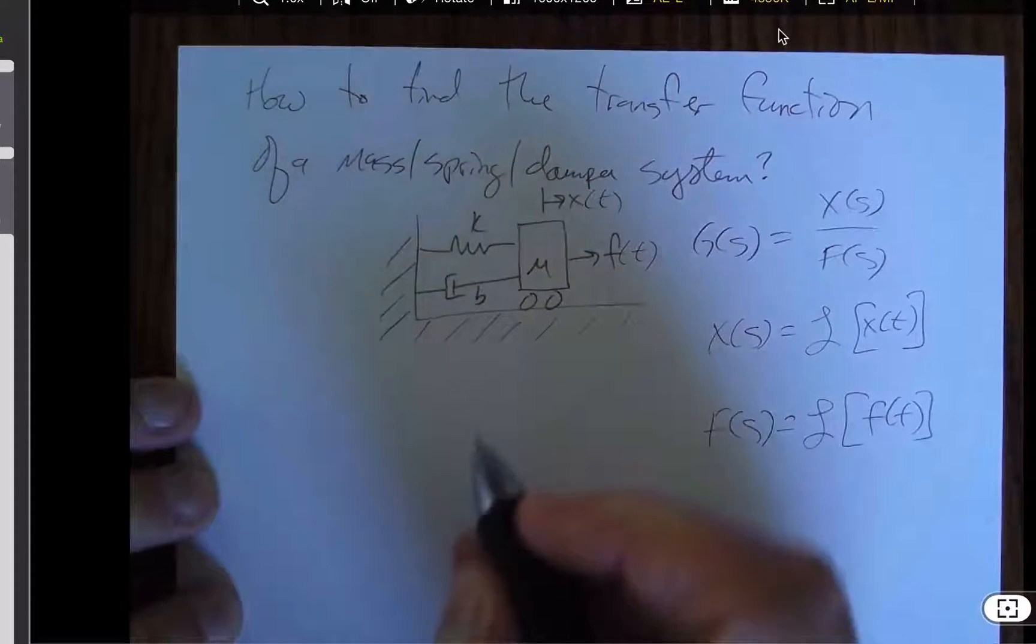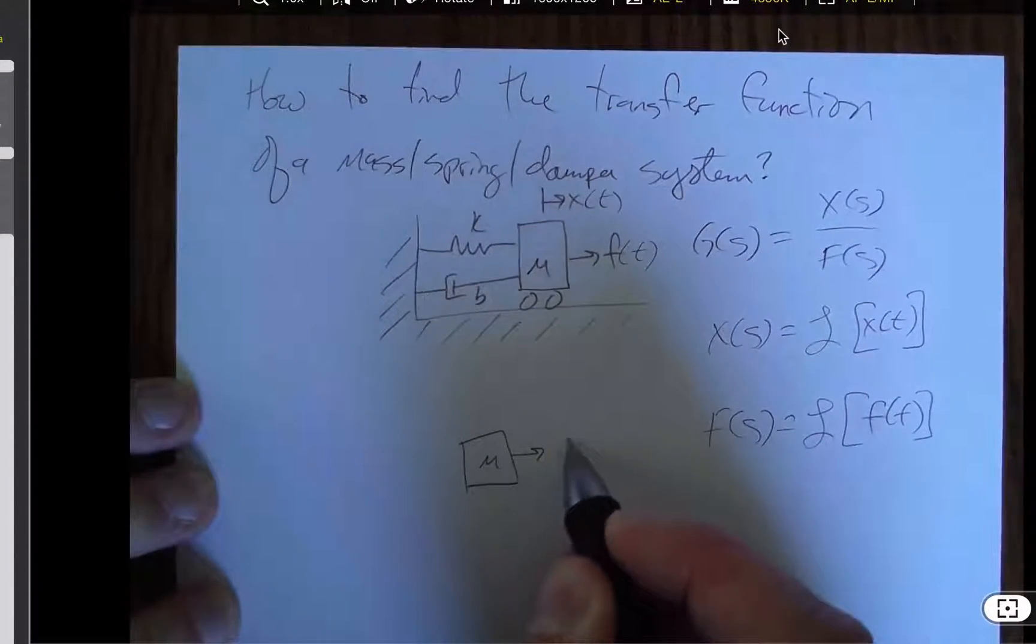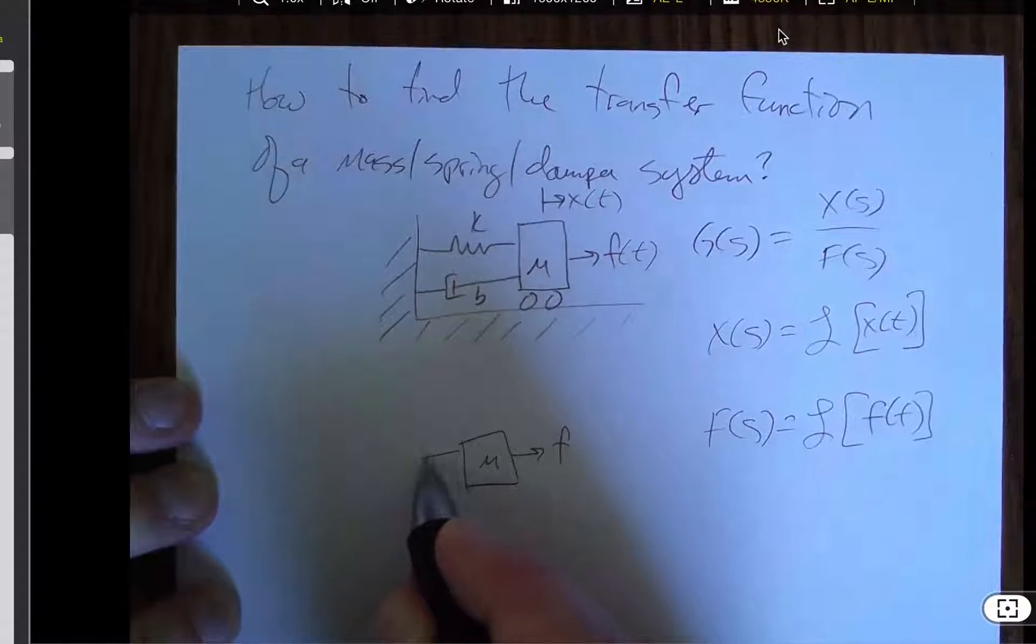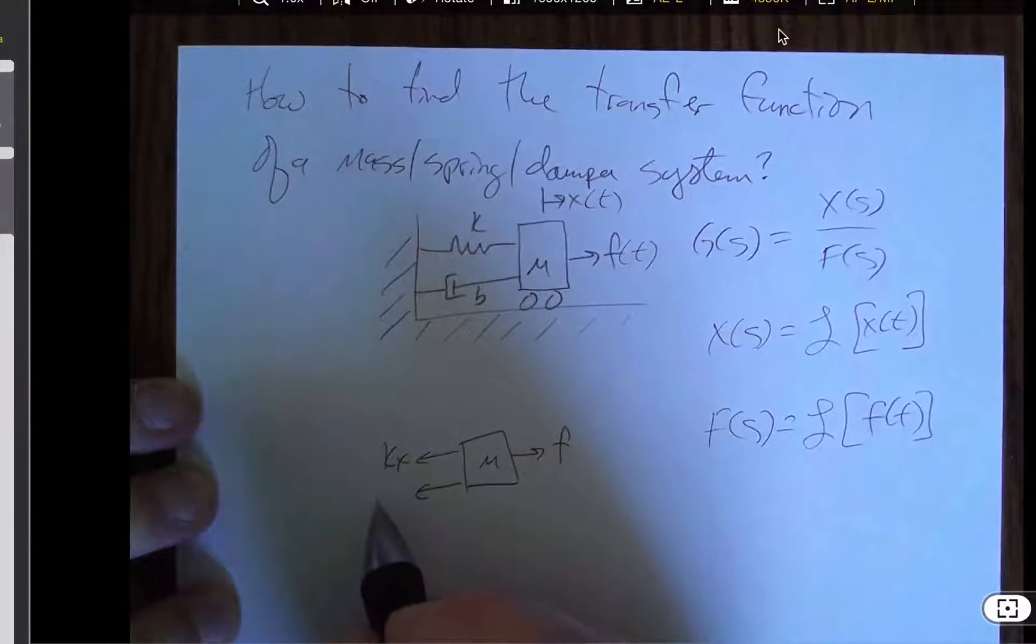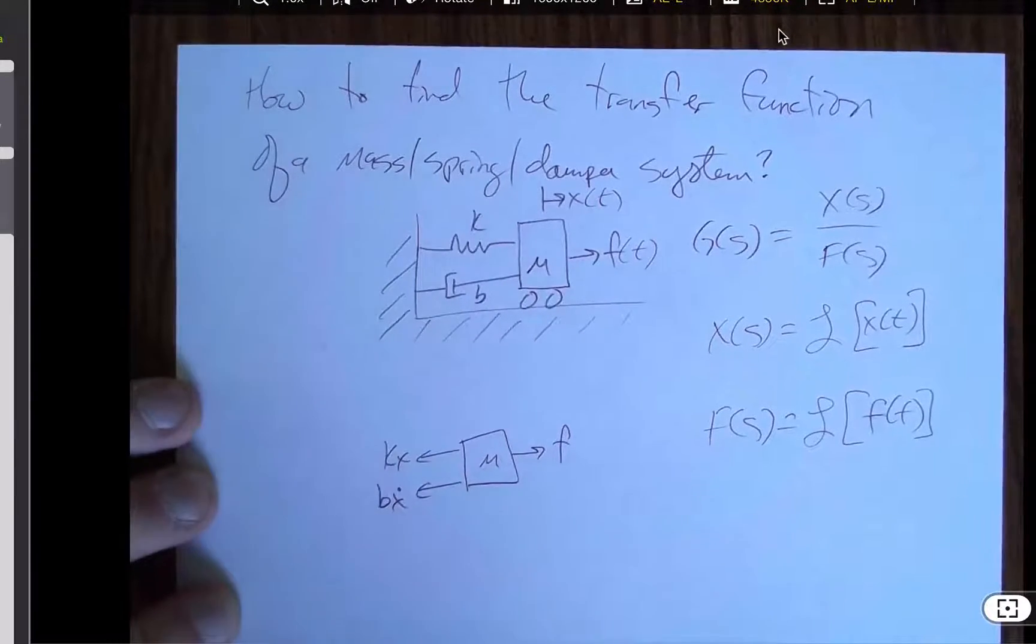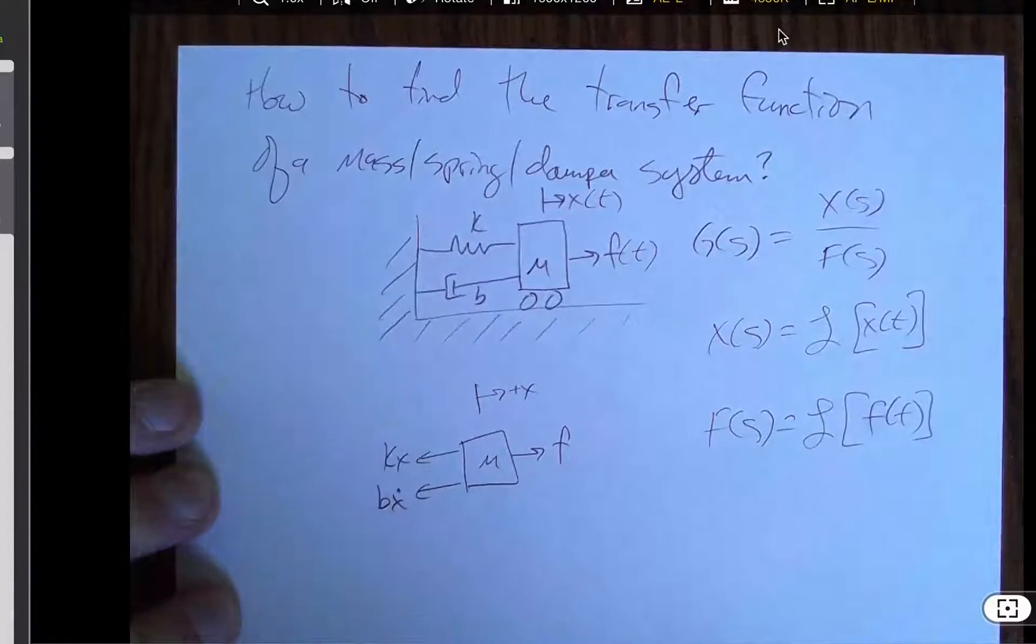So our first move is going to always be with this kind of mechanical system to draw a free body diagram. We've got input force f going in a positive direction. We've got a spring force that is kx based on Hooke's law. And we've got a damper force that is bx dot going to the left. We've defined this to be the direction of positive x.